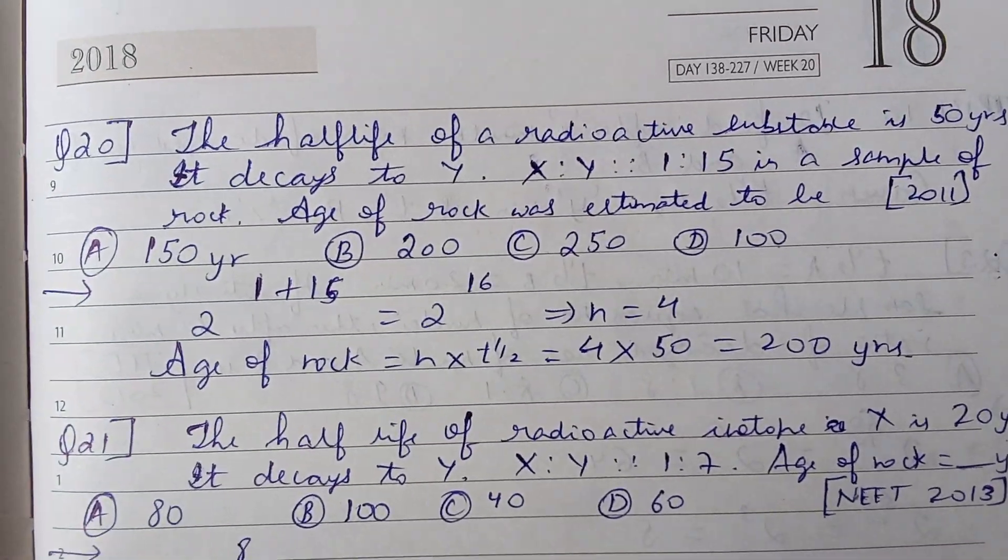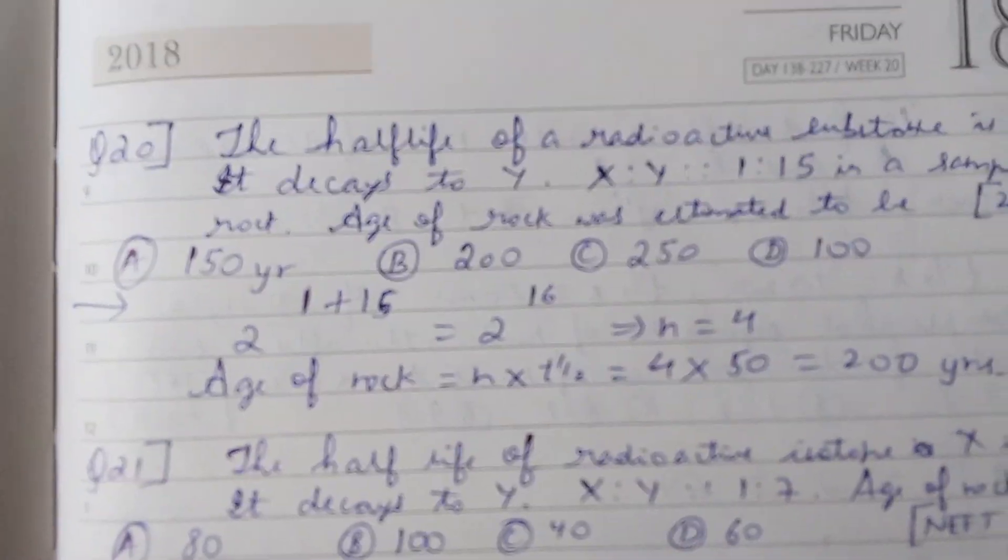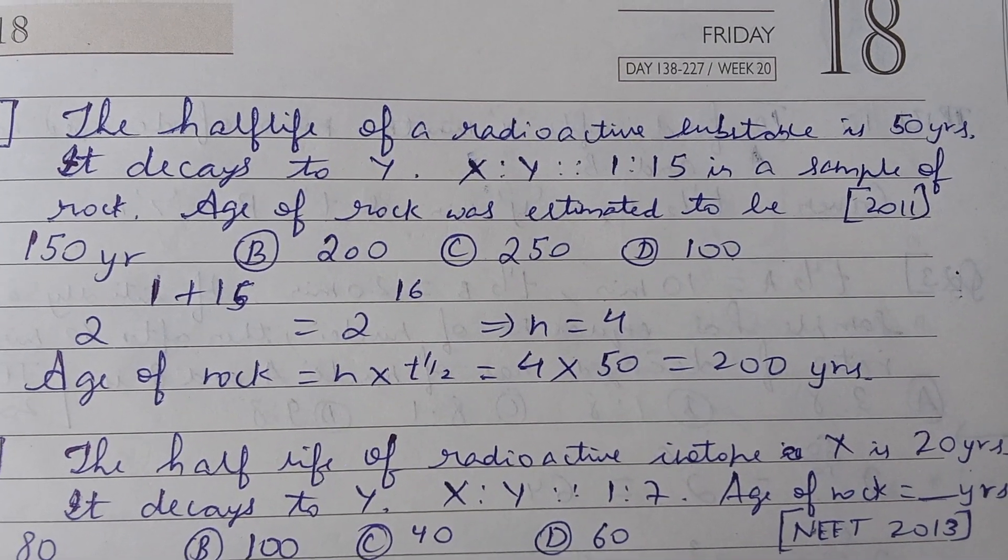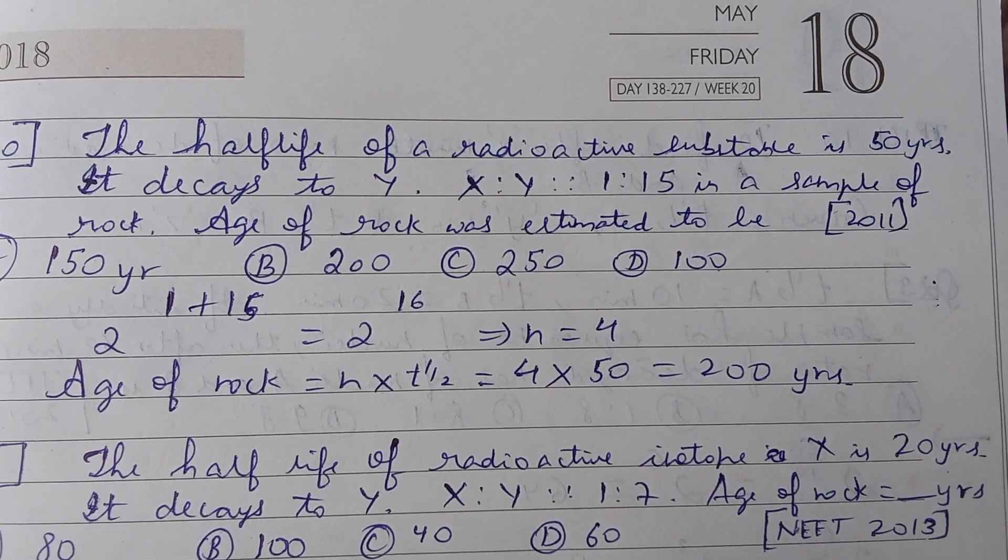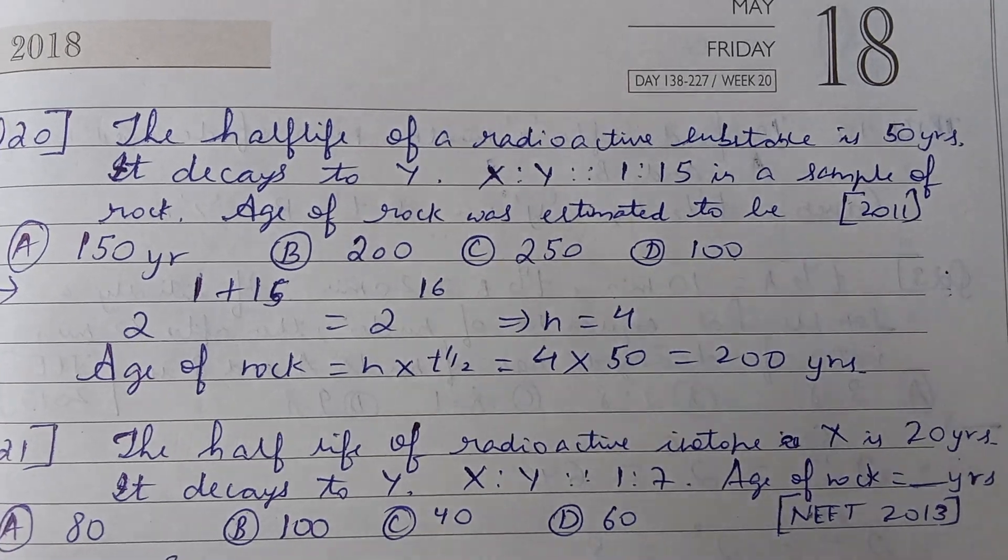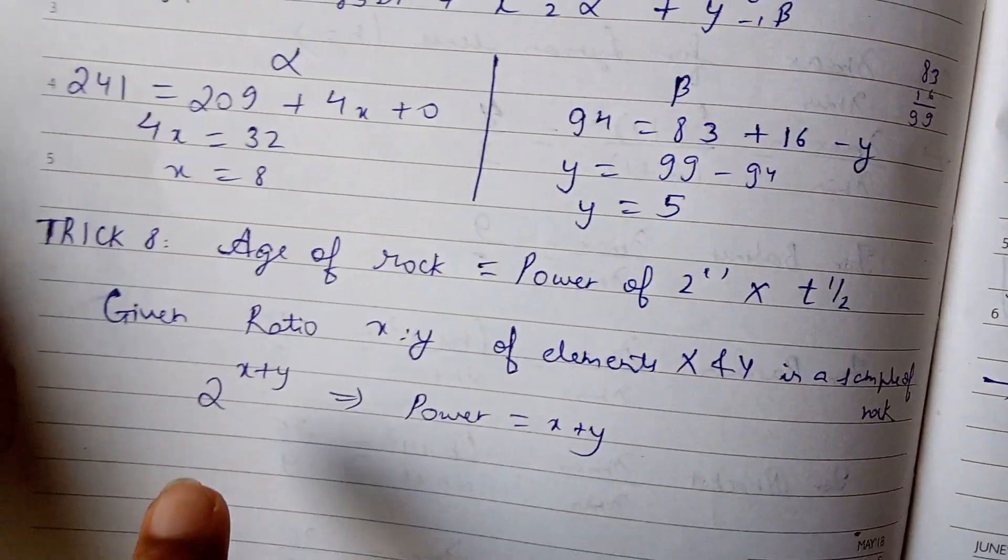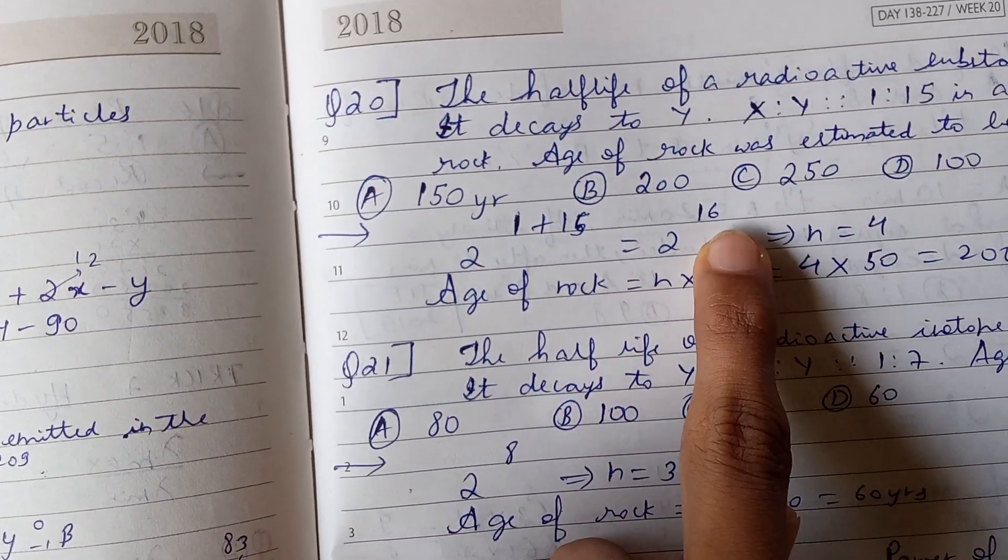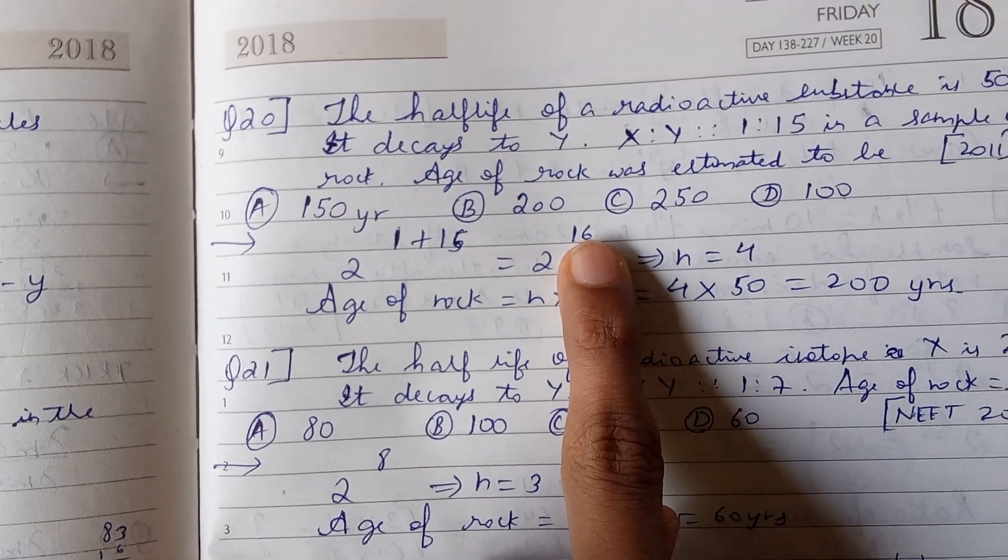We'll see a question which was asked in JEE 2011. We're given that the half-life is 50 years, it decays to y, x:y is 1:15, and we need to find the age of rock. So now see, 2^(1+15) - you have to do 1+15 - the power is x+y, so 1+15 equals 2^16.